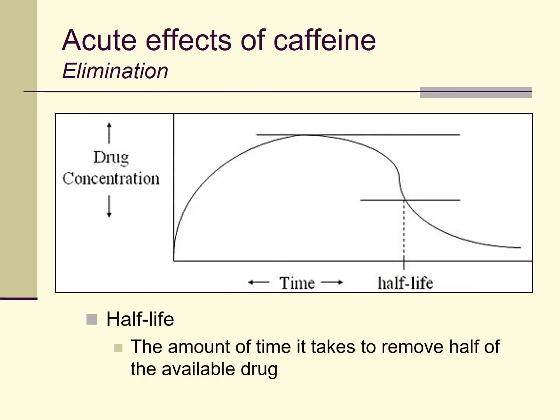A term I'll introduce now is half-life. If you've taken a good physics class, this will remind you of radioactive decay. In this context, half-life is the amount of time it takes to remove half of the available drug from your system. Typically, what we're talking about is the blood serum level of a drug — how long does it take for your body to get rid of about half of the total dose? Most of your caffeine gets metabolized by the liver, and there's some variability in the half-life of this drug, from as little as a couple of hours to maybe as many as 10 hours.